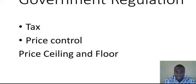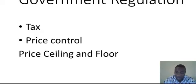Another way government regulates is by price regulation — the government actually regulates the price charged by the monopoly. It could be in the form of price ceiling or price floor. Price ceiling means the government sets the maximum price for the monopoly, stating that the product should not go above a certain price. For price floor, the government sets the minimum price, stating that the product should not go below a certain price.